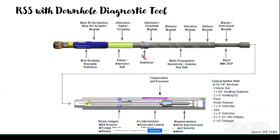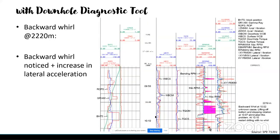A typical rotary steerable BHA: you have a PDC bit and behind the bit, the rotary steerable system, electronics to measure resistivity and gamma, a directional tool to take surveys, and the drilling optimization tool. The drilling optimization tool has strain gauges to measure bending forces and bending loads, bit pounds, shocks, accelerometers for lateral vibrations, and magnetometers for stick-slip or downhole RPM.